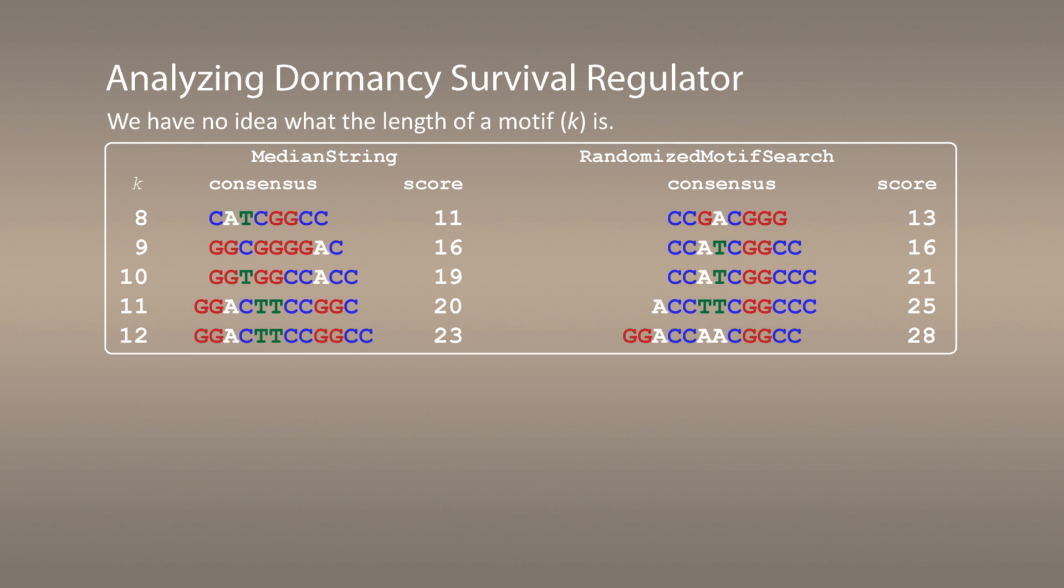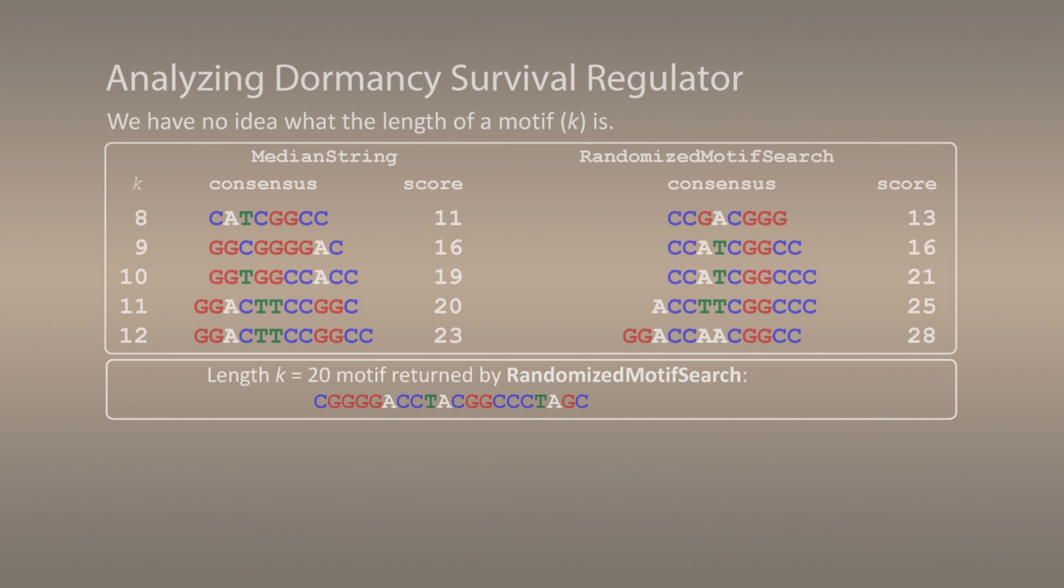For median string, we actually will have difficulties going beyond k equal 12, because remember it is an exponential algorithm whose running time grows as 4 to the power k. But for randomized motif search we can search for very long motifs. For k equal 20 we actually find this rather long motif.